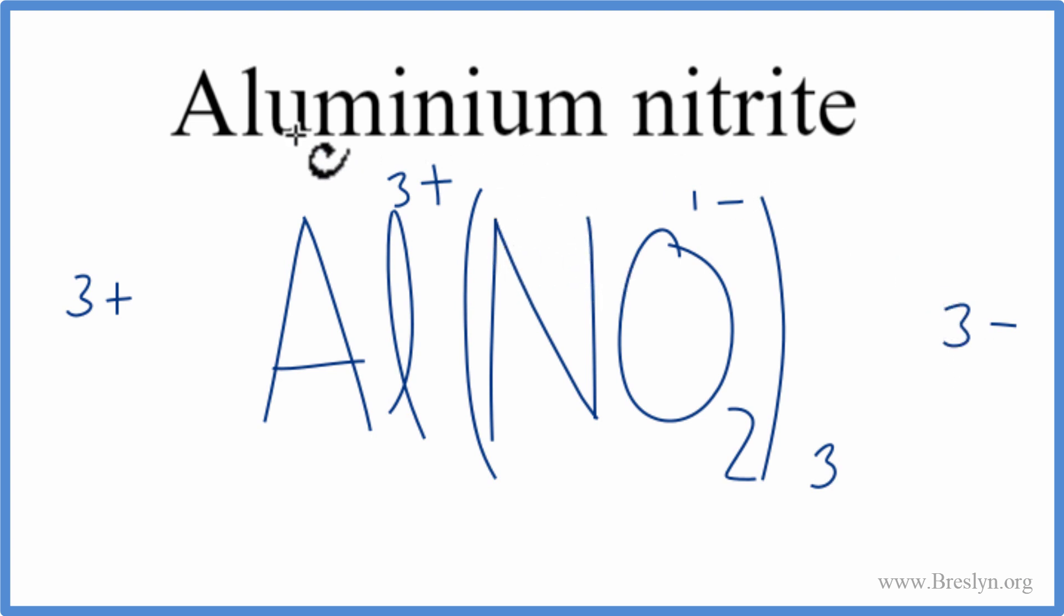This is the correct formula for aluminum nitrite. We'll clean it up, and that's it. Aluminum nitrite, Al(NO2)3.